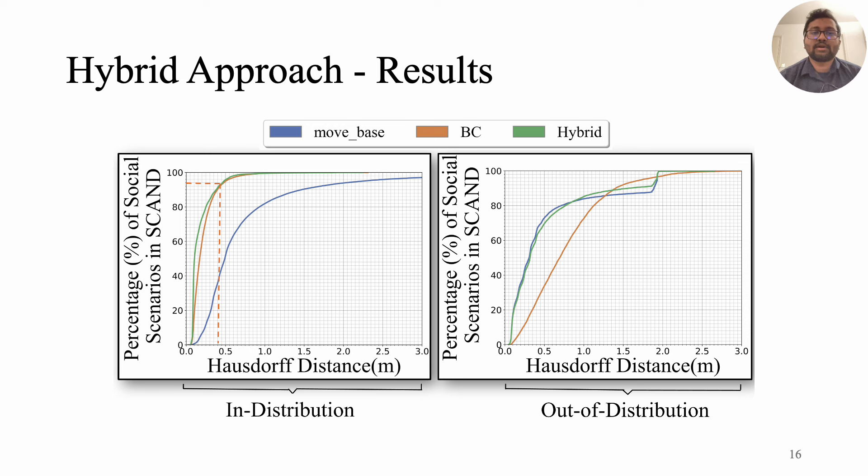When tested on unforeseen data not included in SCAND, our hybrid approach was still able to perform well, achieving 80% alignment with human trajectories.